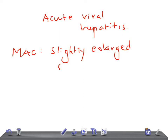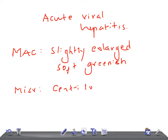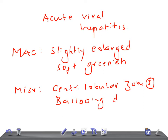The liver will appear slightly enlarged and large, soft, and greenish. On microscopic examination, remember the earliest hepatocellular injury is most marked in zone 3, that is the centrilobular zone.